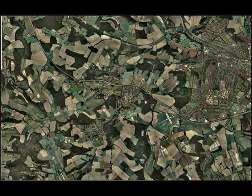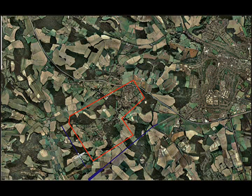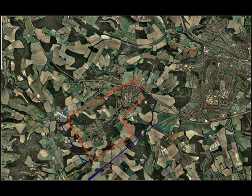The Runway 24 noise abatement procedures include a 10-degree left turn at the airfield boundary to remain south of the noise abatement zone, a delayed crosswind leg flown to remain west of Freeth, and a turn onto the downwind leg avoiding Fingist.